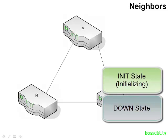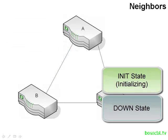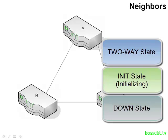The next step in becoming a neighbor is known as the init state — short for initializing. Neighbors are starting to talk to each other, sending out hello messages. If the hello information is okay, like router B thought it was, and it sent back a hello message with router A's router ID in it, and that process happens for router B as well — router A sends a hello back to router B with router B's router ID — then those two routers move into what is known as the two-way state. This state means that bi-directional communication has been established between router A and B.